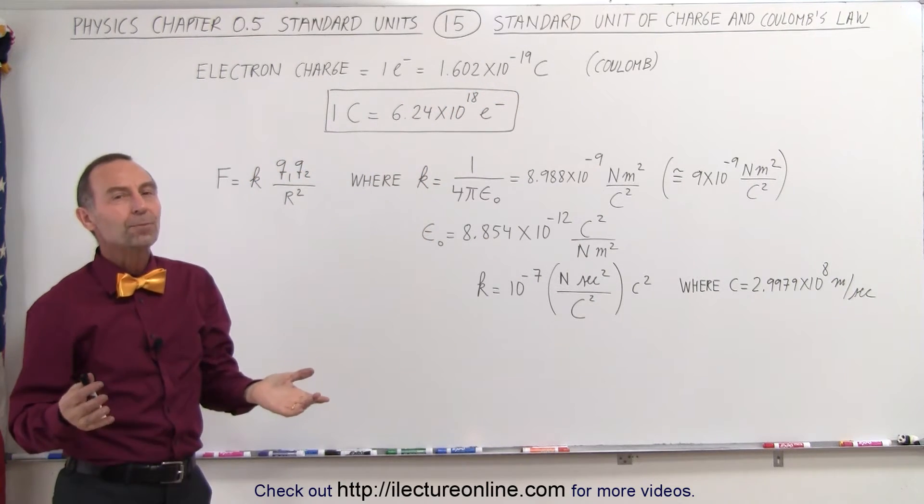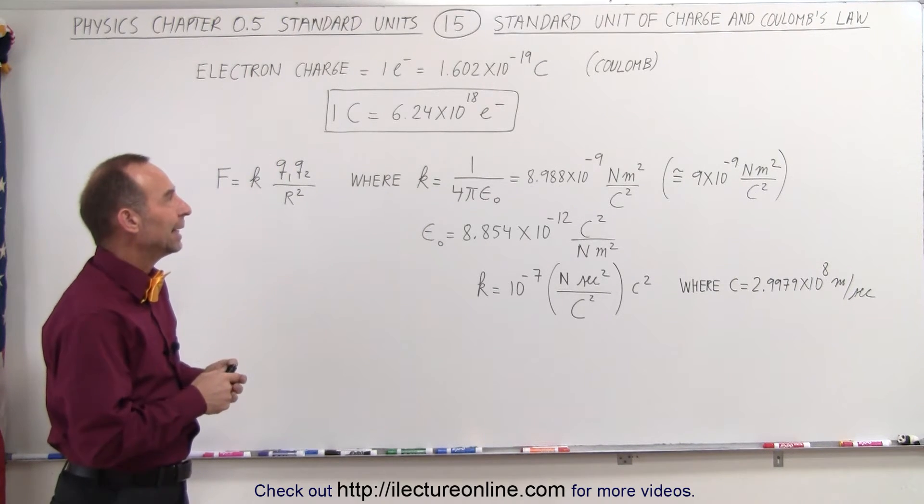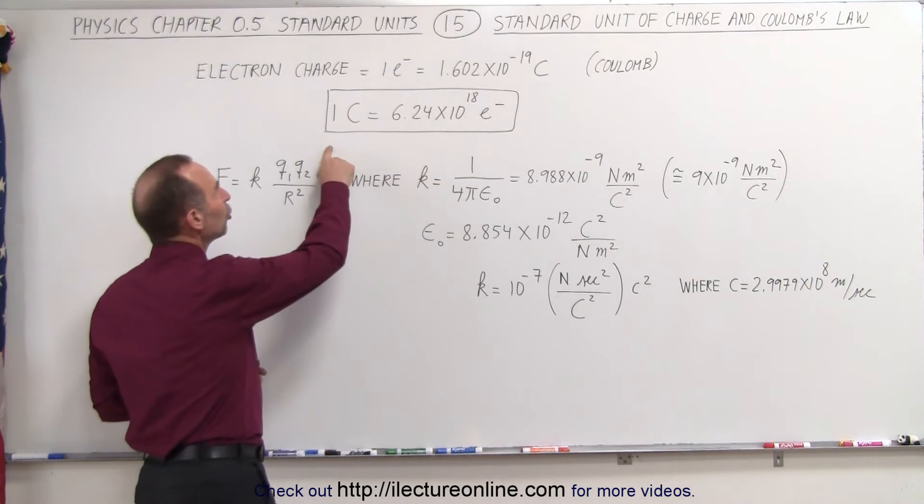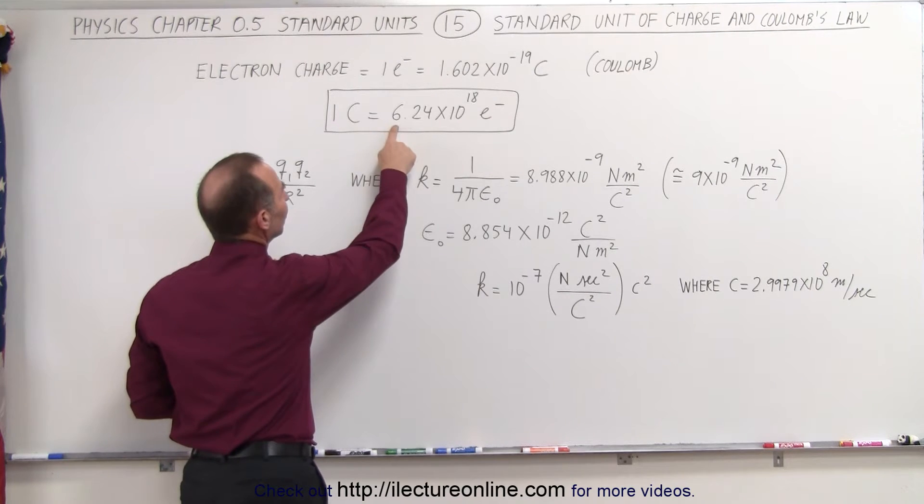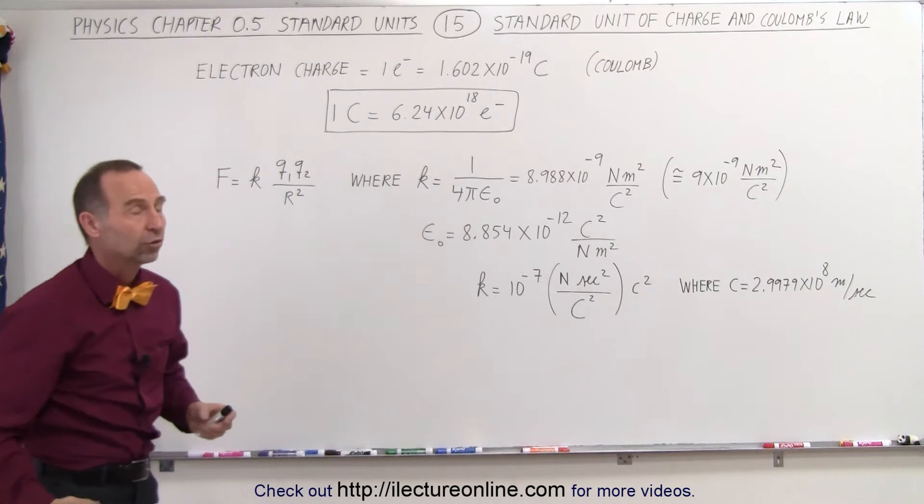So what's a coulomb? A coulomb is the standard unit of charge in physics. 1 coulomb is defined as a total of 6.24 times 10 to the 18 times a single electron charge.